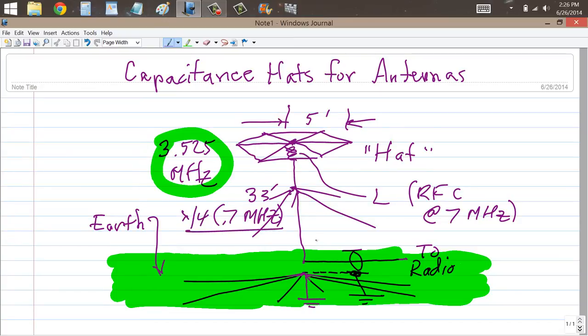So you have a two band antenna. You have a 40 and 80 meter vertical antenna, a dual band antenna without any traps. You do have that loading coil right here.